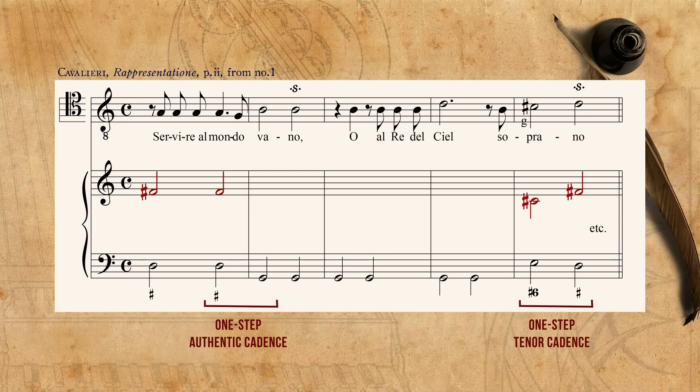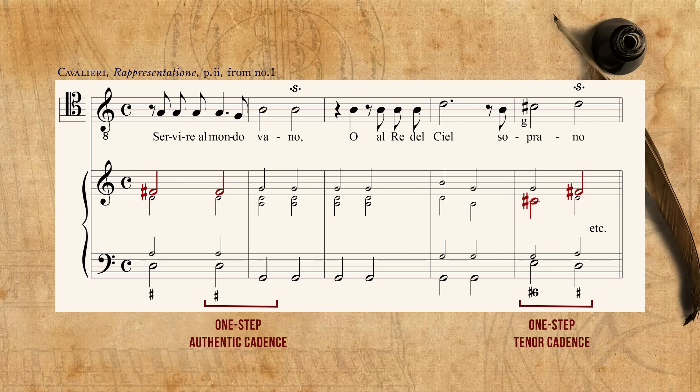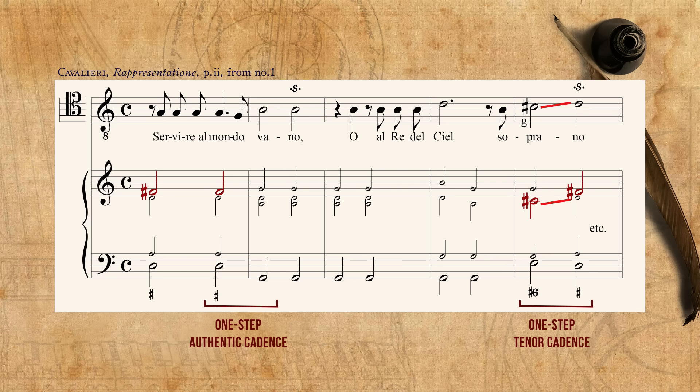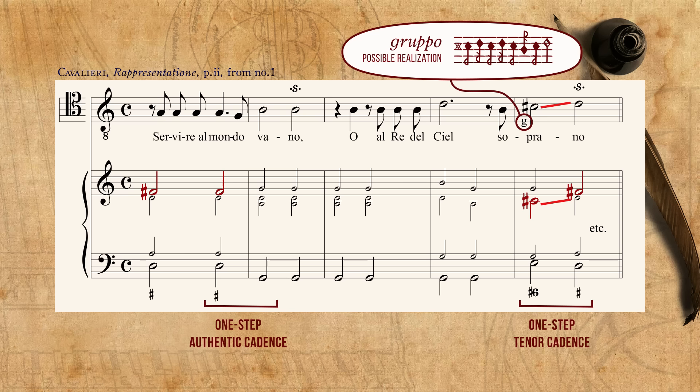Now that we know how Cavalieri's basso continuo notation works, let's see how it is manifested in real musical excerpts from the Rappresentazione. The point of this episode is not to discuss the music of Cavalieri, and not even the performance practice of the early basso continuo. Instead, we just want to explore the ingenious and detailed manner of notation that forces us to think in separate voices when we create our realizations — it forces us to make counterpoint with our fingers. In this simple excerpt, there are two one-step cadences: an authentic cadence and a tenor cadence. The fact that each sign refers to a specific note — the sharp to a sharp tenth and the sharp six to a sharp six — helps us in choosing the position of our realization. Notice that the sharp six forces us to double the singer's line.